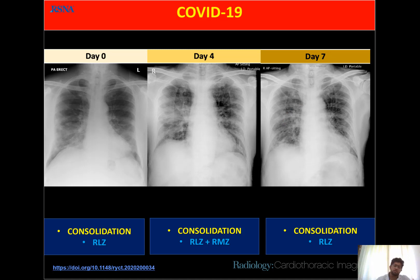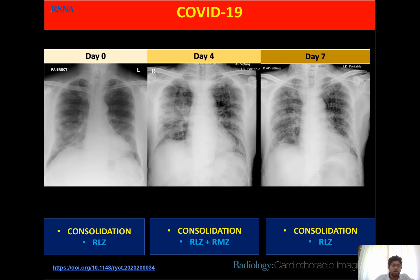X-ray findings may not always be visible, but CT may show findings clearly. In SARS 2003, chest X-ray played a predominant role, whereas during the COVID-19 pandemic in China, CT played a major role in diagnosis because X-ray is less sensitive compared to CT — CT can pick up early changes.